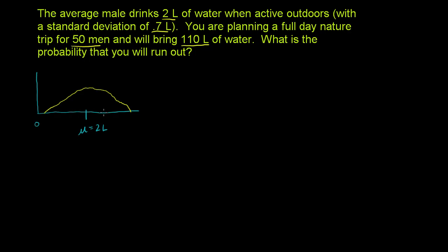So 1.7 liters would be 1 standard deviation below the mean. This would be 1 liter, 2 liters, 3 liters. One standard deviation is going to be about that far away from the mean — to the right and to the left. The standard deviation is equal to 0.7 liters. So that's the actual distribution of how much water the average man needs when active.